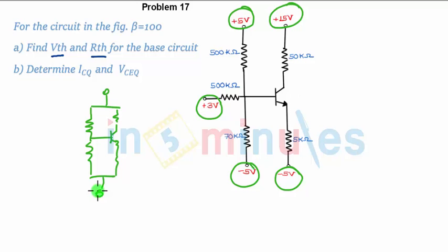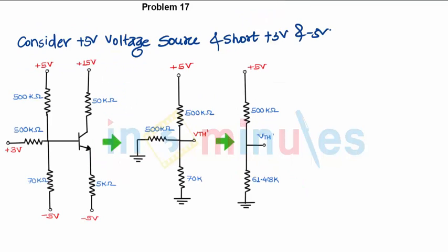For this, we need to consider 5 volts separately, 3 volts separately, and minus 5 volts separately—that is, using the superposition theorem. We are considering the plus 5 volt voltage source and short-circuiting plus 3 volts and minus 5 volts.